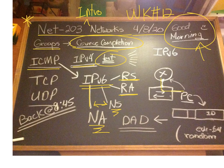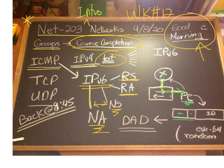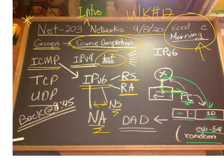A PC solicits the router for some information, and then the router can return the information to the PC and give it an address. So we have this prefix — the global prefix, the subnet, and then we have the interface ID, which we can use EUI-64 or we can select a random number to generate that. Then a default gateway is generated to the link local address.